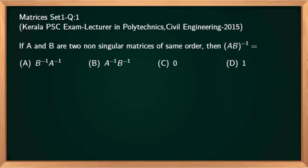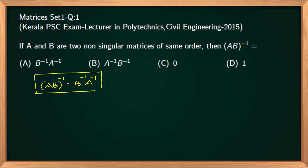In this session we will discuss a few questions from matrices. First question: if A and B are two non-singular matrices of the same order, then (A into B) inverse equals which option? The basic rule of matrix inverse states that (A into B) whole inverse equals B inverse A inverse. This is the basic rule for finding the inverse of the product of two matrices.